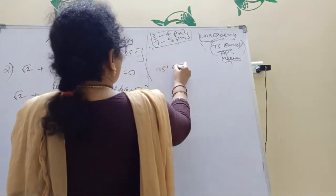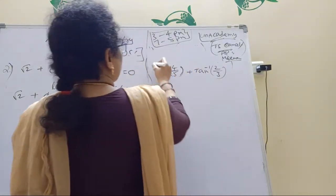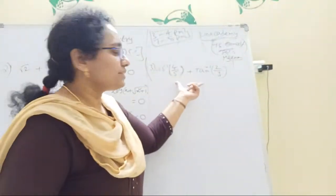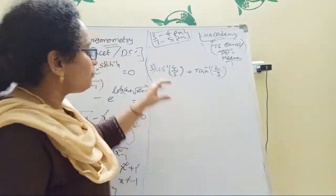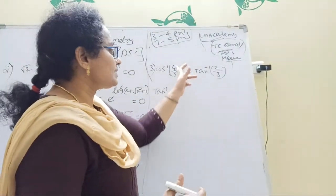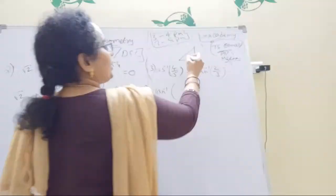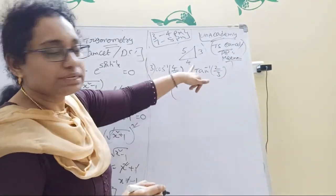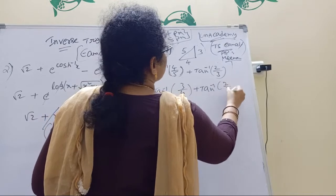Third question: cos⁻¹(4/5) + tan⁻¹(2/3). Since both functions need to be in tan⁻¹ form to apply the addition formula, convert cos⁻¹(4/5): adjacent/hypotenuse = 4/5, so drawing a right triangle with sides 4 and 5, the opposite side is 3 (Pythagorean triple). Therefore cos⁻¹(4/5) = tan⁻¹(3/4).